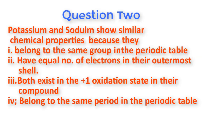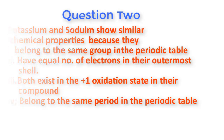Question number two: Potassium and sodium show similar chemical properties because they — one: belong to the same group in the periodic table; two: have equal number of electrons in their outermost shell; three: both exist in the plus one oxidation state in their compounds; and four: belong to the same period in the periodic table.